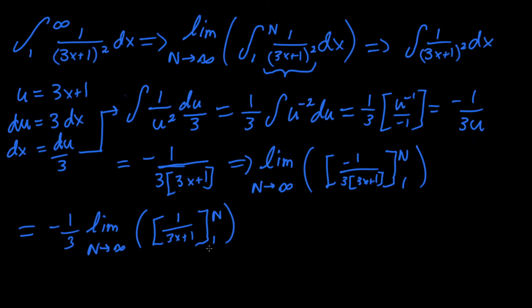So all we got to do now is plug n in for x, since those are the boundaries we are solving, so it will be negative 1 third times the limit of n approaching infinity. Now let's do the upper bound, 1 over 3n plus 1, now we subtract that by the lower bound, plugging in now for 1, 1 over 3 times 1 is 3, and then plus 1 is 4, so minus 1 fourth.